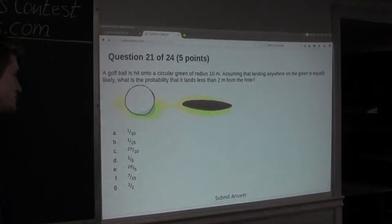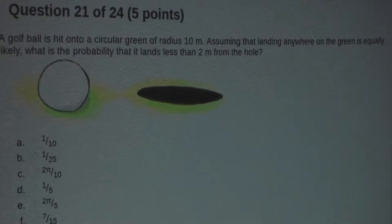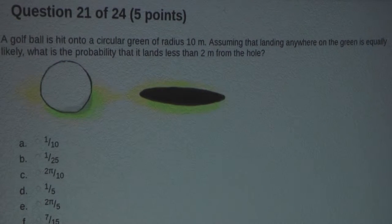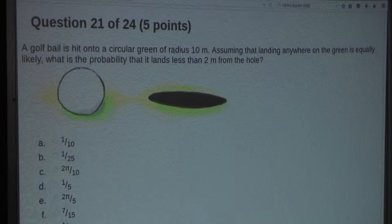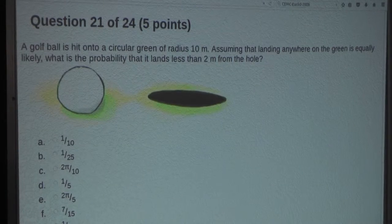So the question is: A golf ball is hit onto a circular green of radius 10 meters. Assuming that landing anywhere on the green is equally likely, what is the probability that it lands less than 2 meters from the hole?